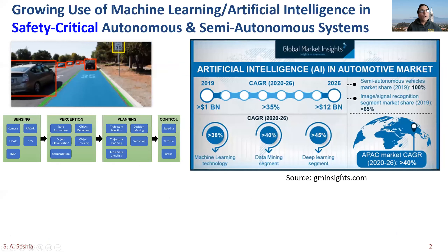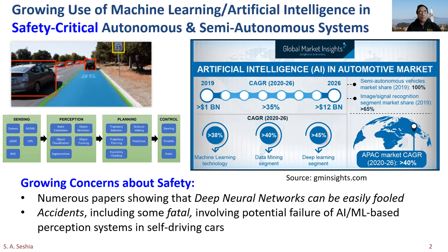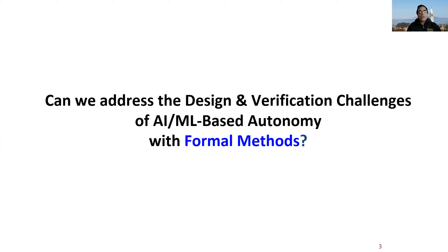The context here is this growing use of machine learning and AI, particularly in safety-critical systems. In the area of autonomous systems, self-driving cars are a very visible example, where deep learning in particular is used in a variety of tasks in the autonomy pipeline, and this is only projected to grow over the next decade. At the same time, there are growing concerns about safety. There have been numerous papers showing that you can cause deep neural networks to do bad things, and unfortunately there have been accidents, including some fatal accidents that may potentially involve the failure of AI/ML-based perception systems.